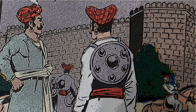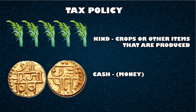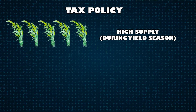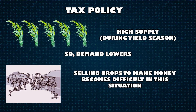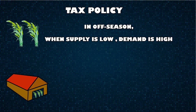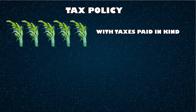Shivaji Maharaj also asked his representatives to ensure that the money given was being used for the right cause and not being misused. He allowed his people to pay taxes in cash or in-kind. This helped manage a high-supply, low-demand situation in which selling crops to generate cash to pay tax is difficult. In the vice versa situation, it also kept inflation in his kingdom stable at all times due to the availability of crops in his warehouses.